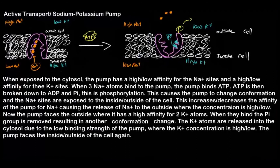Next we're going to look at active transport, specifically the sodium-potassium pump, which you need to know for the exam. We're going to read a paragraph together, and at certain points we have to circle high or low, or increase or decrease. So when exposed to the cytosol — which is the inside of the cell — does the pump have a high or a low affinity for the sodium sites?